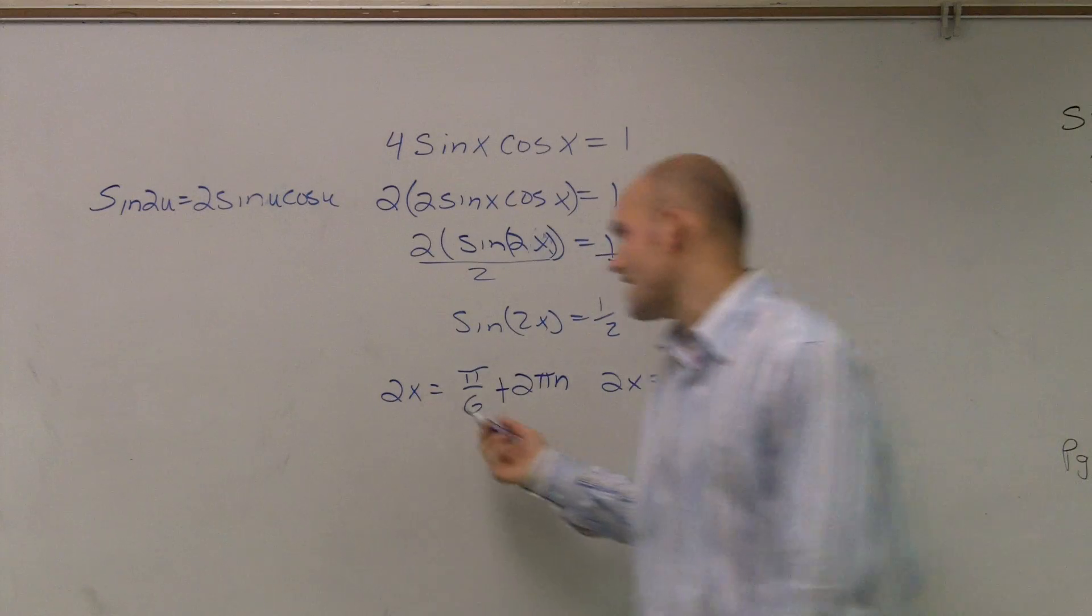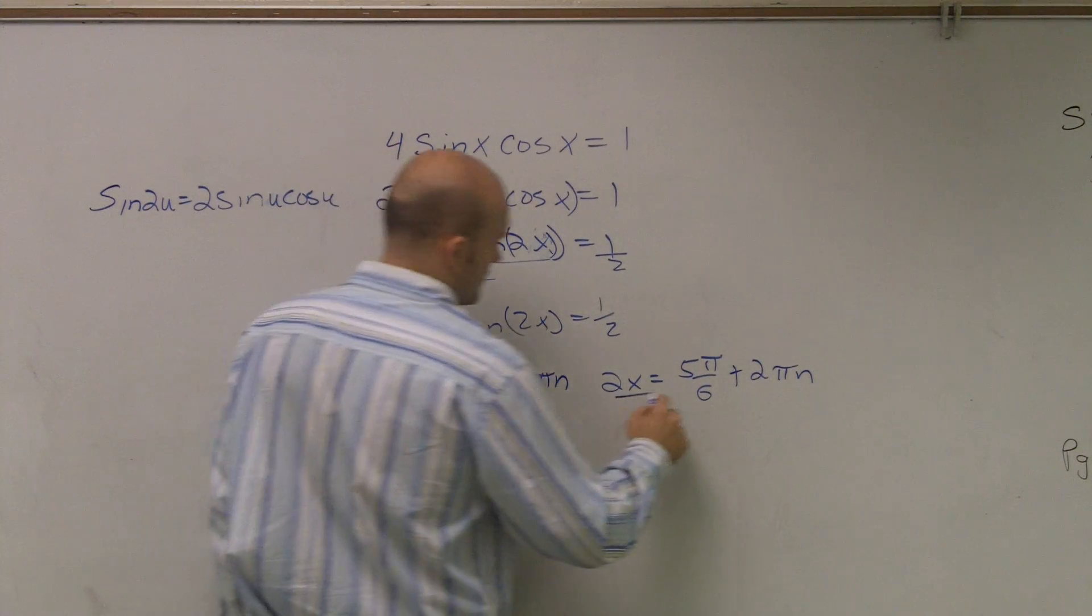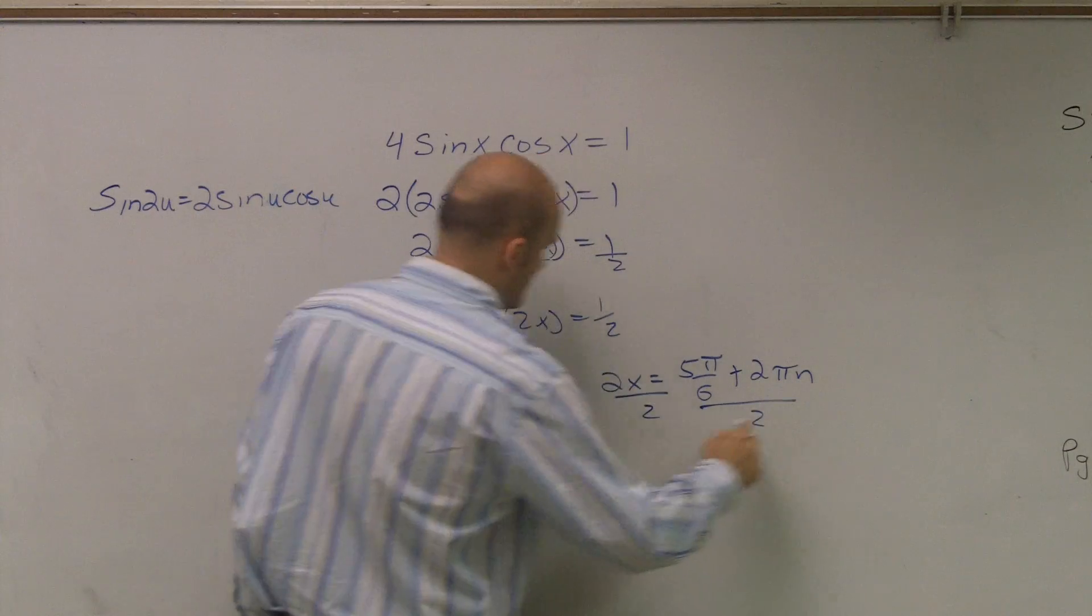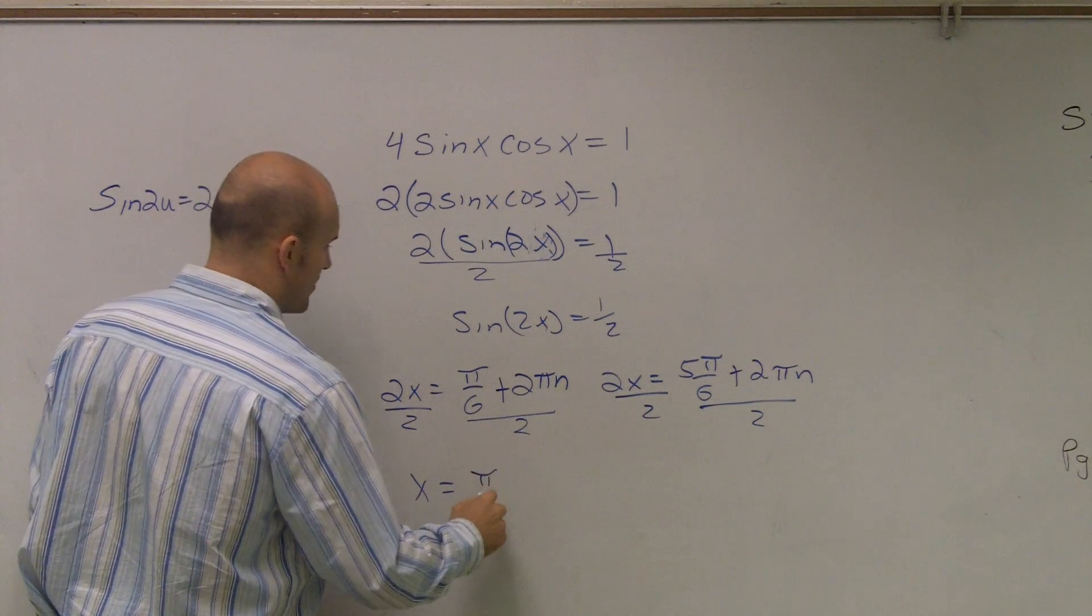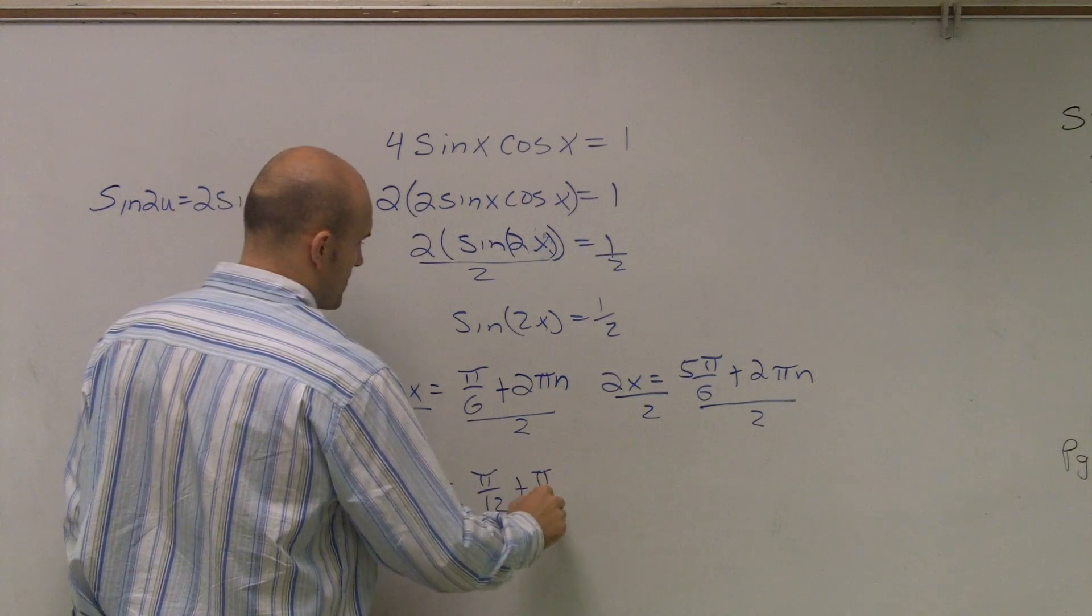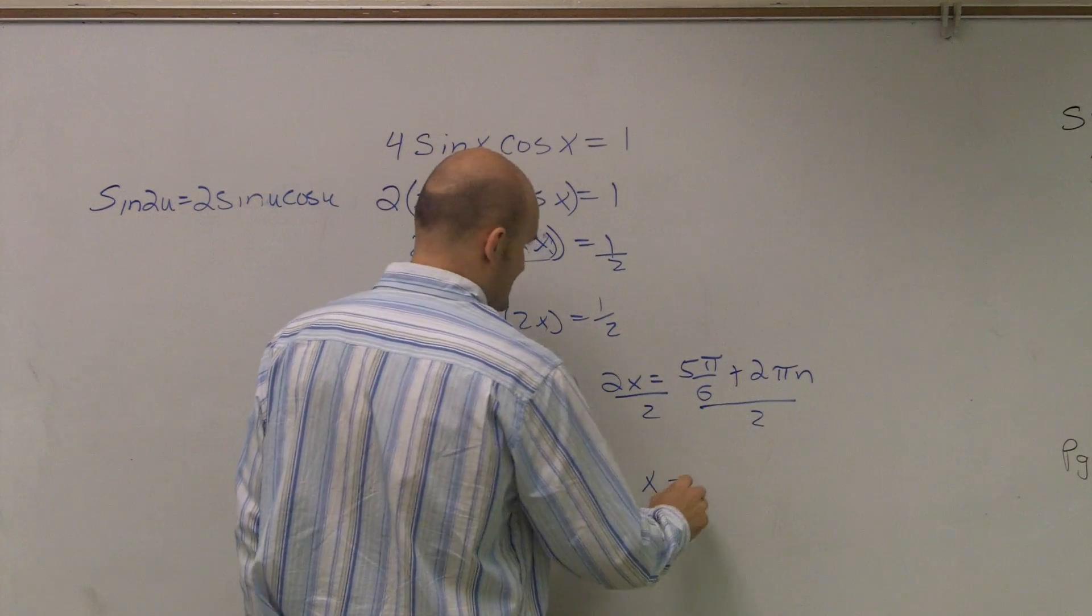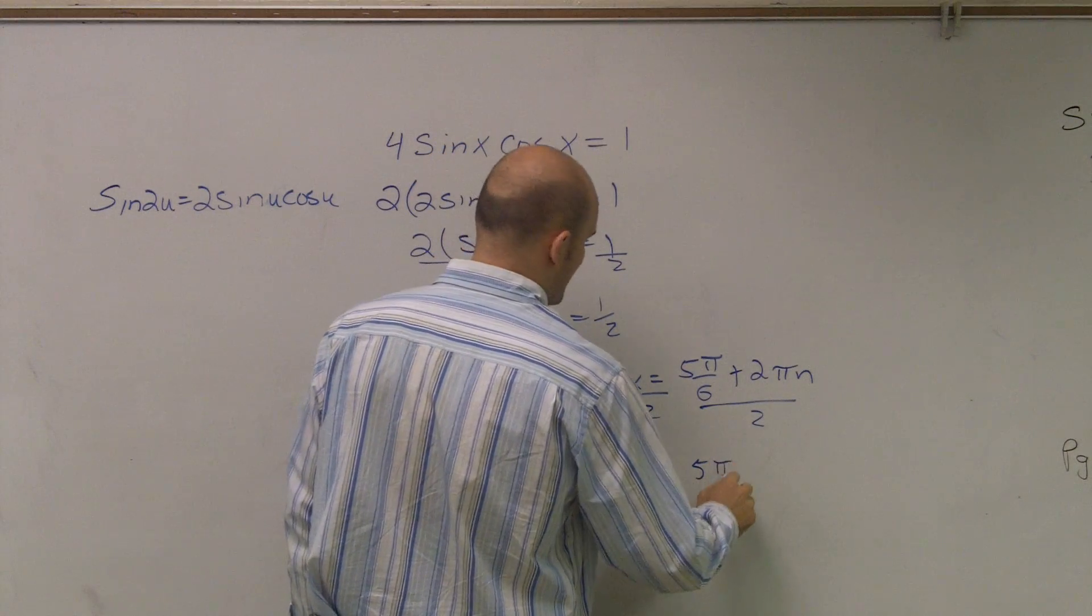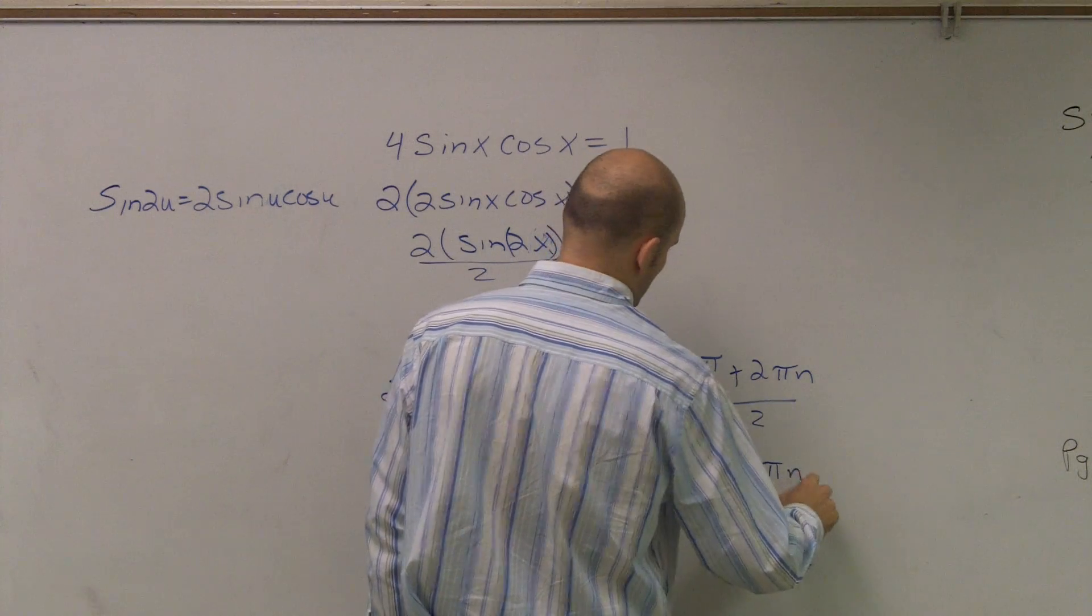Well, remember, now we need to find our value of x. So if I actually divide by 2, what I'm going to get is now x equals pi over 12 plus pi n. And this equals x equals 5 pi over 12 plus pi n.